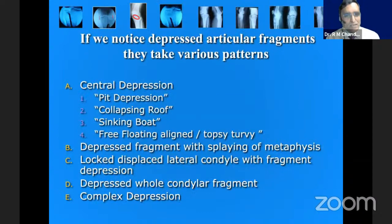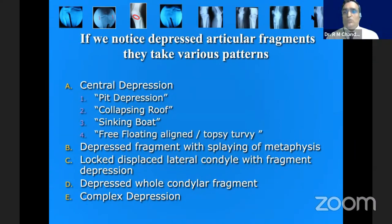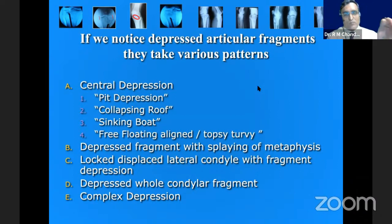We have noticed various depressed articular fragment patterns and they take various forms. In the central depression, I would find them in four categories: a pit depression with a gutter appearance, a collapsing roof where the whole roof of the lateral condyle collapses, a sinking boat appearance, and a free-floating fragment — either aligned or topsy-turvy.